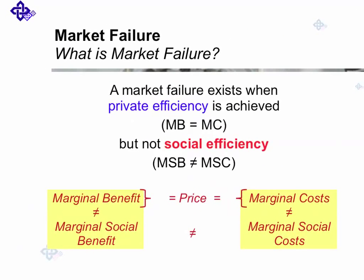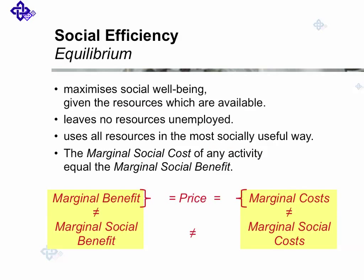So what is market failure again? A market failure exists when private efficiency is achieved — marginal benefit equals marginal cost and that is reflected in the price — but not social efficiency. Marginal social benefits do not match with marginal social costs, and therefore this is not reflected in the price. The social equilibrium is achieved where social well-being is maximized given the available resources, leaving no resources unemployed, using all resources in the most socially useful way, and where marginal social costs of any activity equal the marginal social benefit.